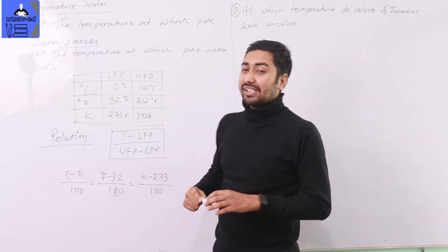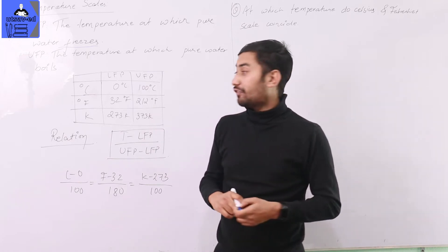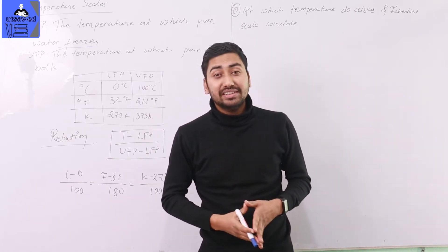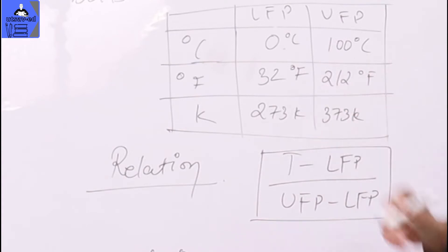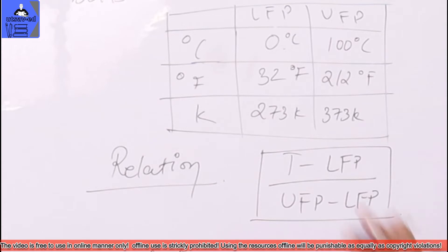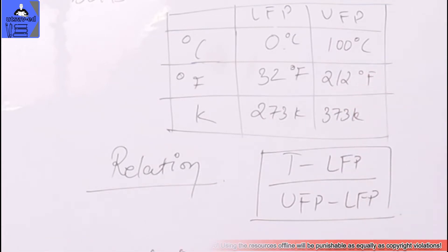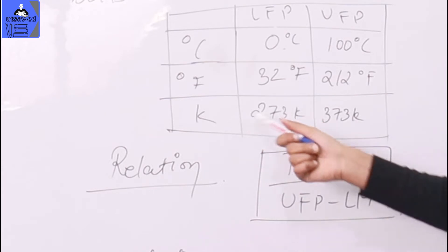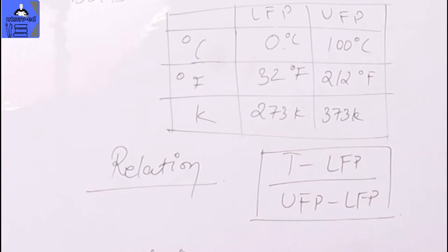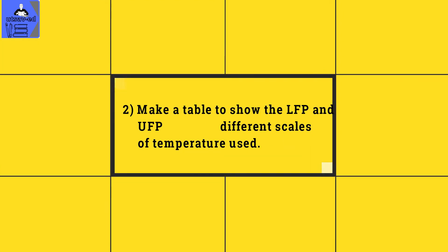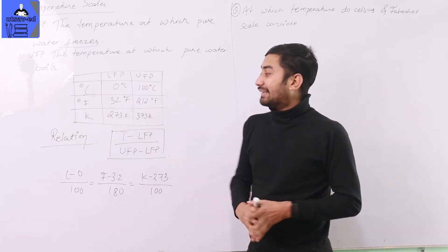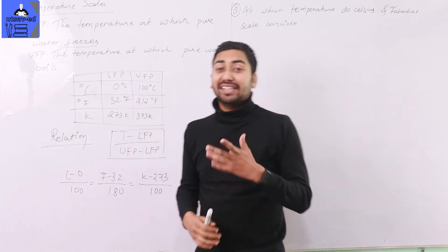Looking at the table for different scales — for Celsius, the lower fixed point is 0°C and the upper fixed point is 100°C. For Fahrenheit, the lower fixed point is 32°F and the upper fixed point is 212°F. For Kelvin, the lower fixed point is 273 K and the upper fixed point is 373 K.